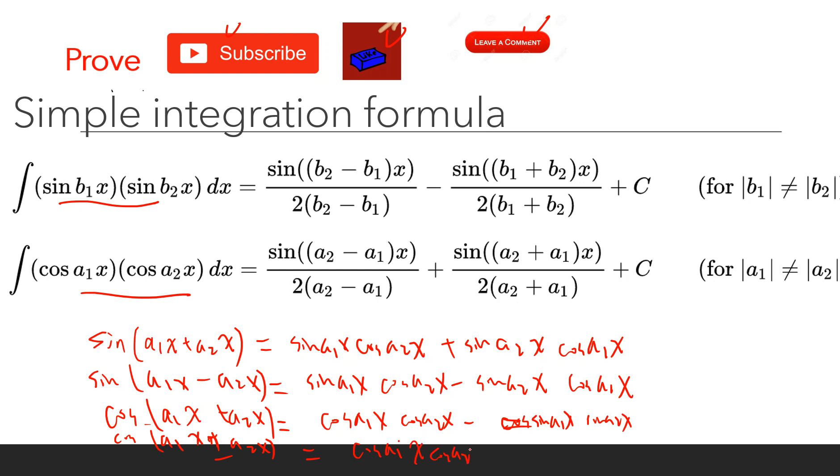So combining these two, we can have this formula: cos(a1x)cos(a2x) equals half cos(a1 + a2)x plus half cos(a1 - a2)x.